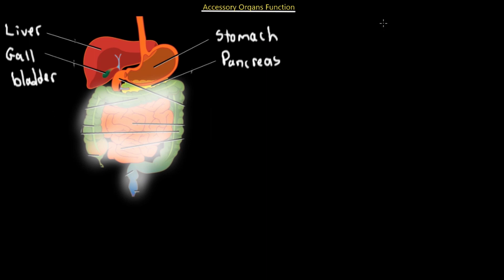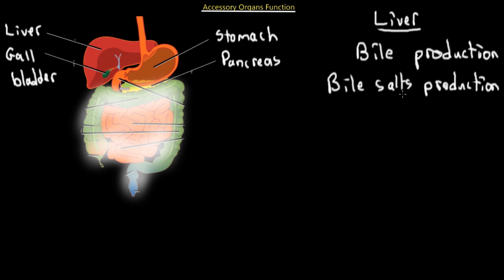Now let's talk about the basic functions of the accessory organs: the liver, gallbladder, and pancreas. Starting with the liver - its main function in terms of digestion is to produce bile salts and bile. The purpose of producing bile and bile salts is for the emulsification of fats, because fats enter the small intestine as large globules. The bile and bile salts emulsify and divide the fats into smaller and smaller pieces, kind of like a detergent used to wash dishes, allowing the fats to be absorbed and digested by the small intestines.